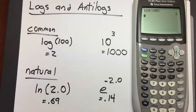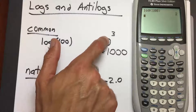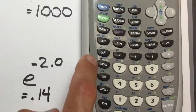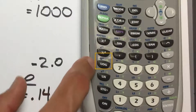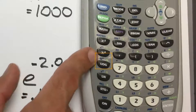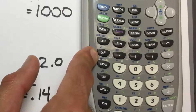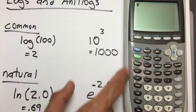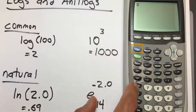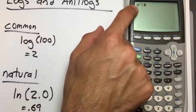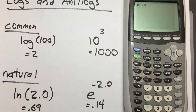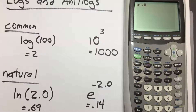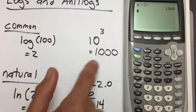To take the anti-common log, look for a button that says 10 raised to something. In the blue text above the log key it says 10 raised to the x. Clear the screen, press 2nd, and then press the log button. The screen now shows 10 raised with parentheses. Enter 3, close the parentheses, press enter, and our answer is 1000 — exactly as expected.